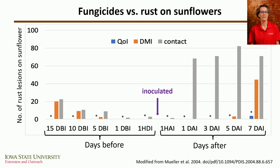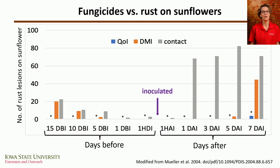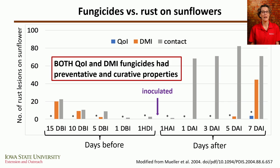Looking at the QOIs — which are excellent against rust on sunflowers — you can see that similarly the QOI prevented rust from developing even after inoculation, showing that a QOI can also have curative properties. This is one reason why I don't like using the terms 'preventative' and 'curative' for these fungicide classes, because both QOI and DMI fungicides have preventative and curative properties.